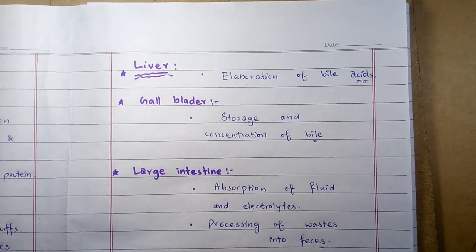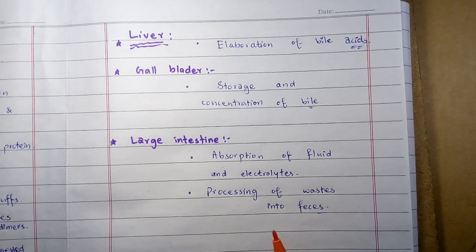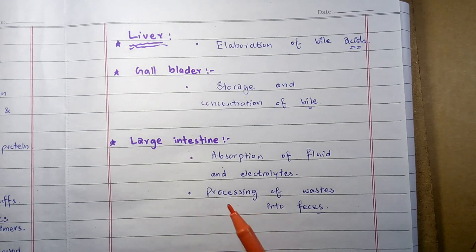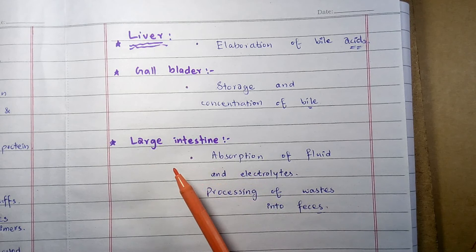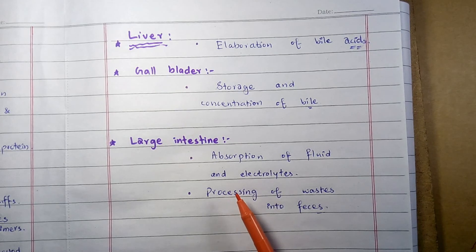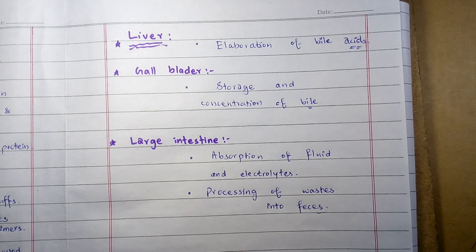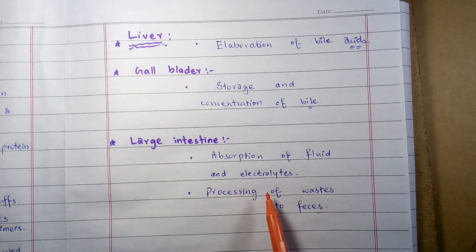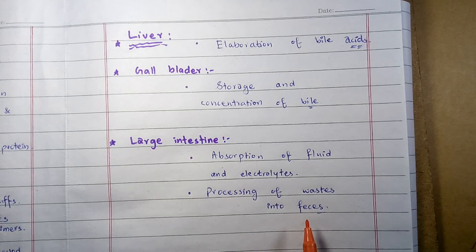The large intestine is the last major part of the digestive system. It is about five feet long muscular tube. It plays a role in completing any remaining nutrient absorption and processing waste. It is divided into the cecum, colon, and rectum, each contributing to the collective function of the large intestine, which is the absorption of fluid and electrolytes and processing of waste.